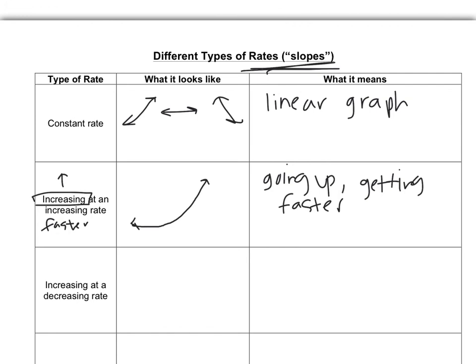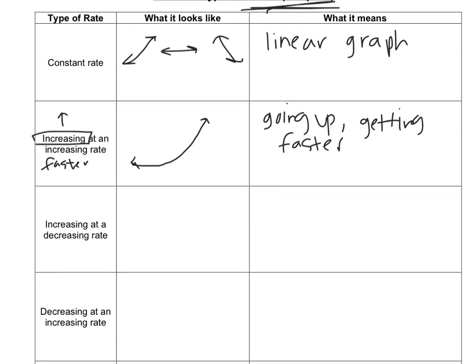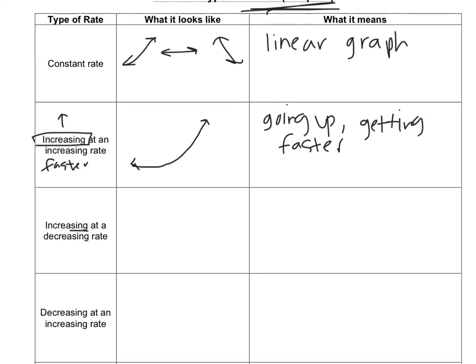The next one might sound contradictory. It's called increasing at a decreasing rate. Increasing means that the graph is going up, and a decreasing rate would mean that it's getting slower. Here's what that would look like. It's going up, but it goes from going up fast to going up slow. So that's what we'll write down. Going up, getting slower. This one might actually be more realistic for a lot of people who are runners. You might start off fast, and then after you kind of peter out your energy, your pace goes down. Except for you super fast runners, who might start off slow and then pick up speed at the end.